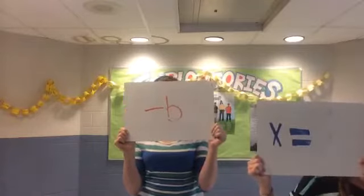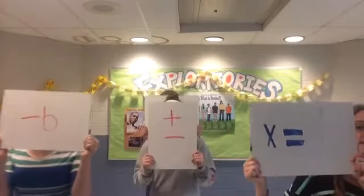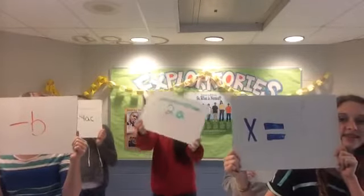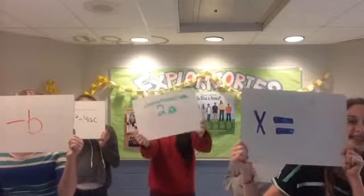x equals negative b, plus and minus the square root of b squared, minus 4 times a times c, all over 2 times a.